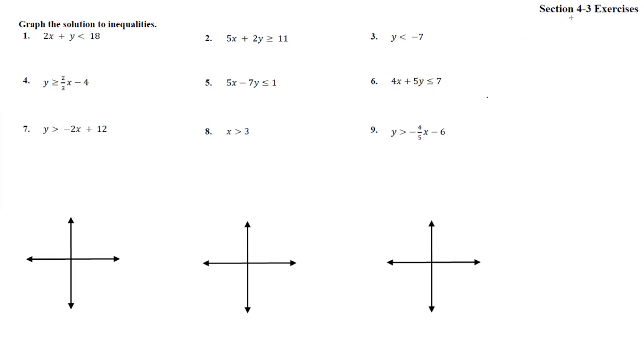Let's give a good review to being able to graph inequalities with two variables. So we get y by itself, subtract 2x from both sides, and we get y is less than negative 2x plus 18.